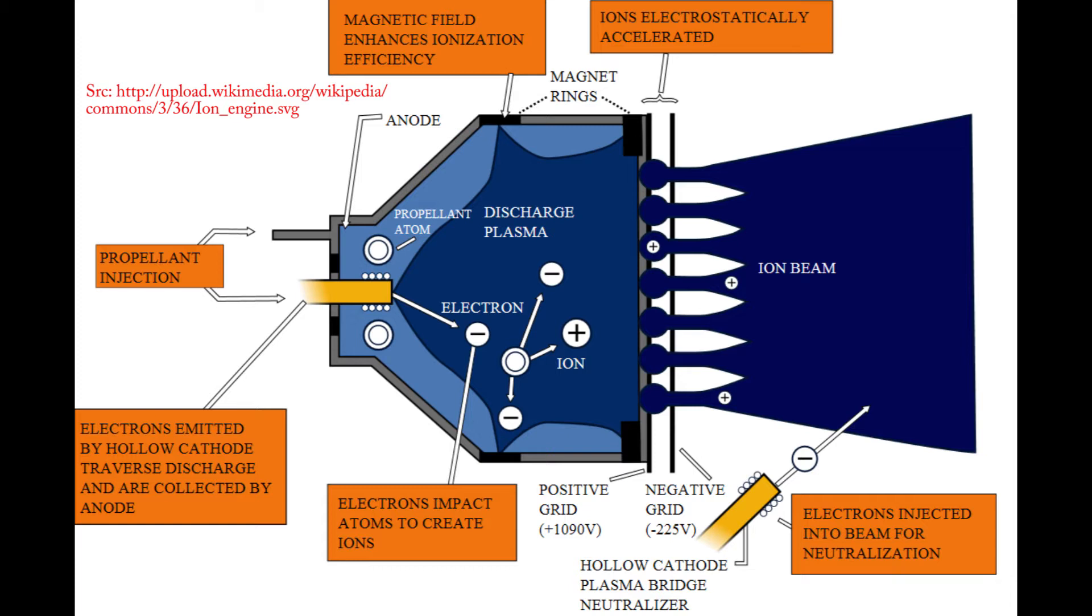These cations are accelerated between two plates with a 1000 volt potential between them. The limitation of this design is that the ions only receive energy from the plates once before they are lost to space.